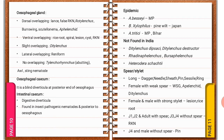Regarding esophageal gland overlapping: dorsal overlapping is present in Hoplolaimus, Scutellonema, Rotylenchulus, Radopholus, Scutelema, and Aphelenchida. Ventral overlapping is present in rice root nematode, spiral nematode, lesion nematode, cyst nematode. Slight overlapping is present in Ditylenchus.